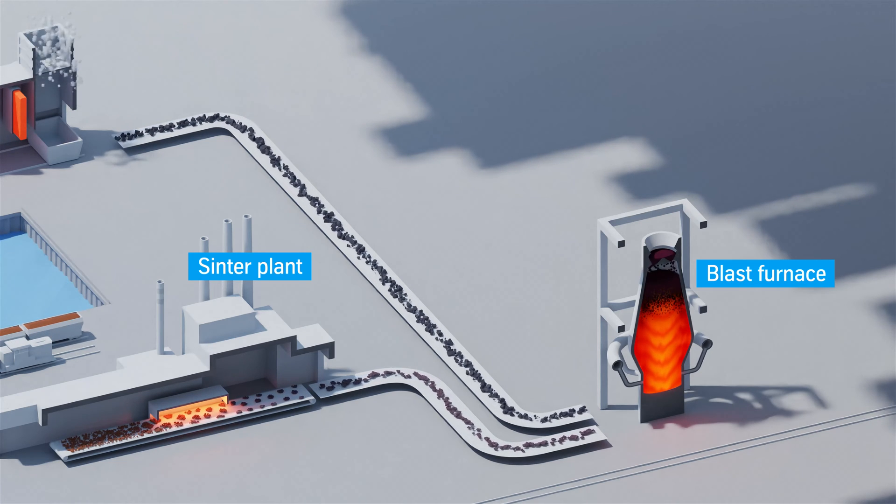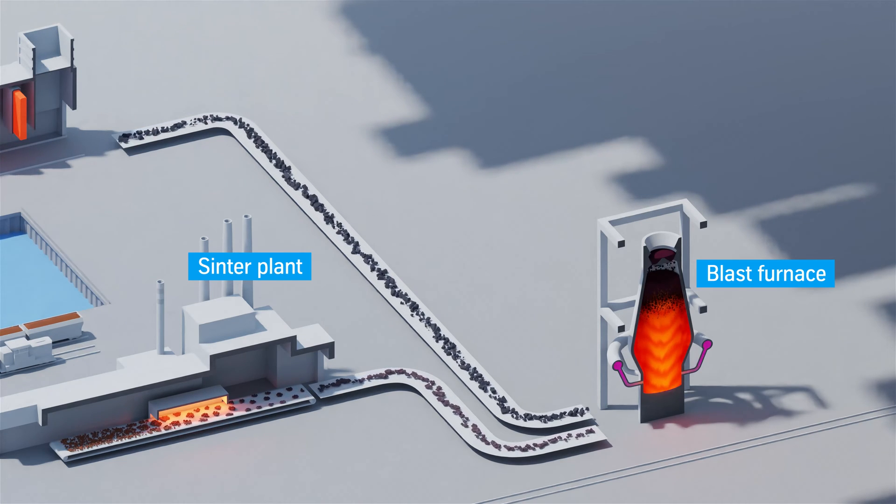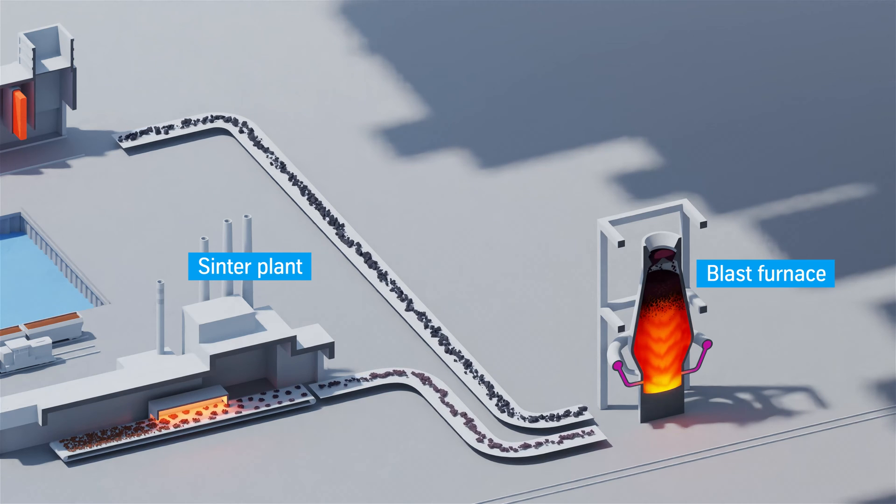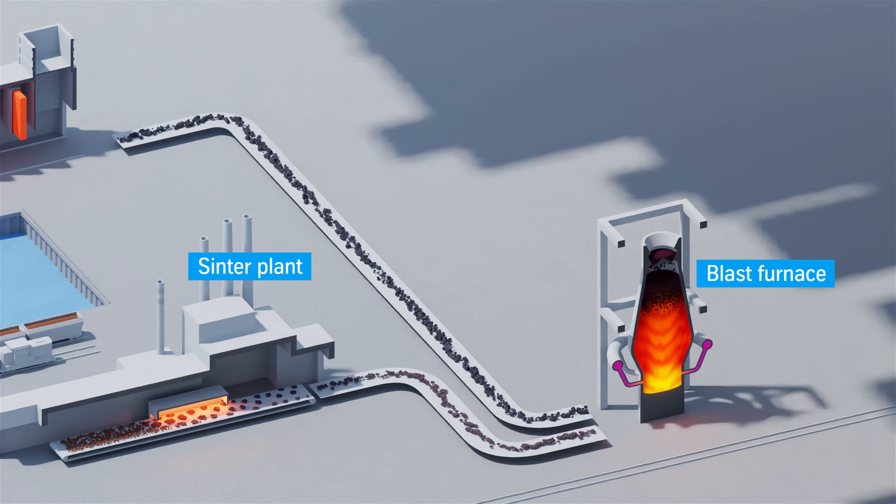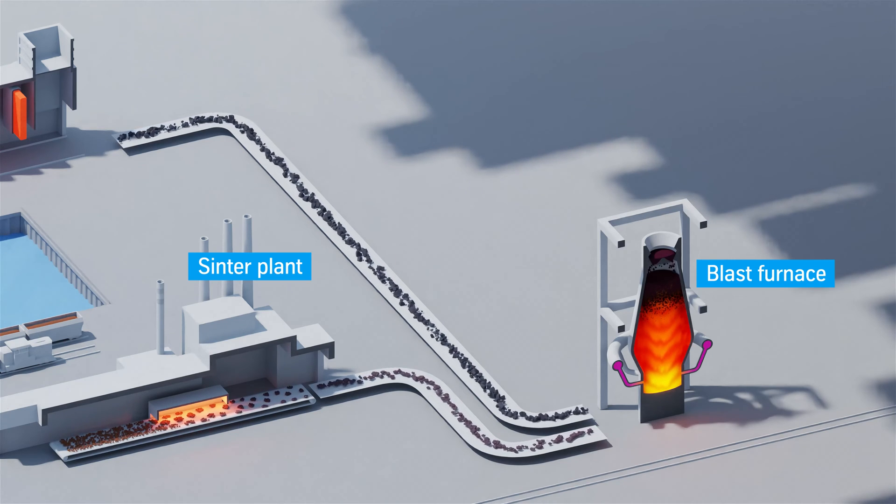Hot air at 1,250 degrees is injected into the bottom of the furnace, causing complex reactions at high temperatures. Oxygen is removed from the iron ore—namely, it is reduced.